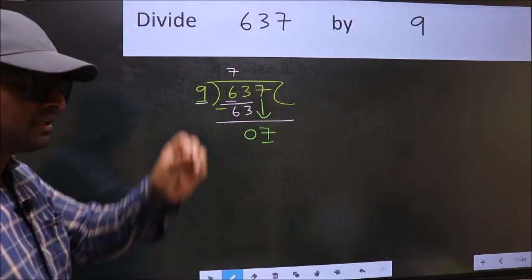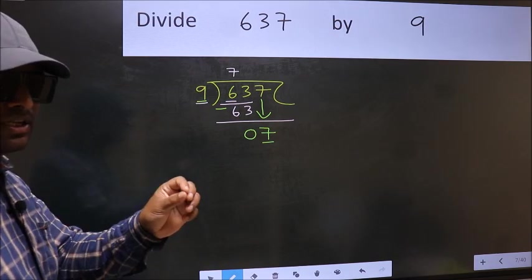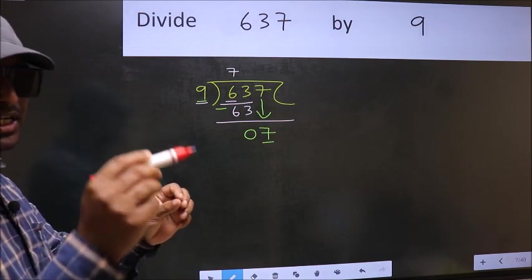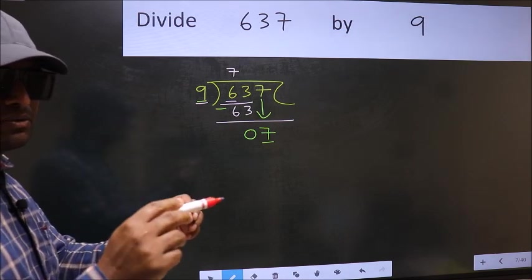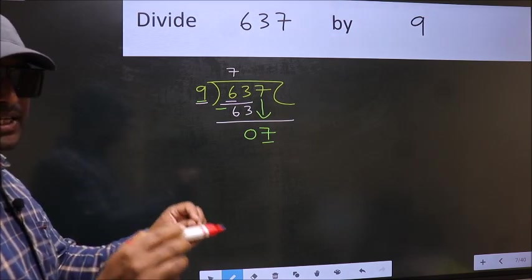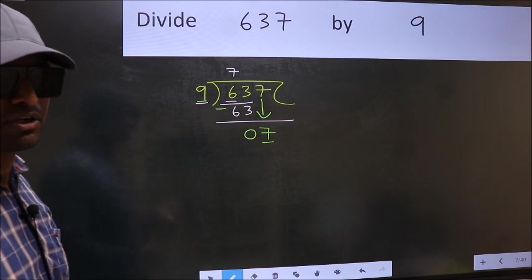I repeat: bringing the number down and also putting a decimal point to take 0 - both at the same step - you should not do.